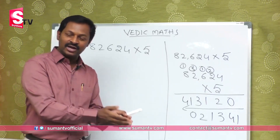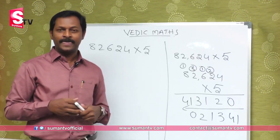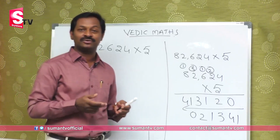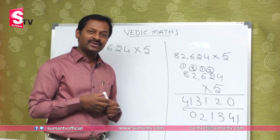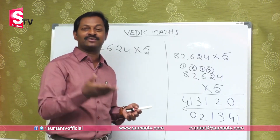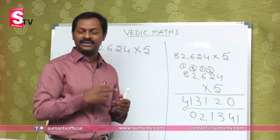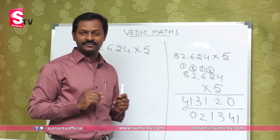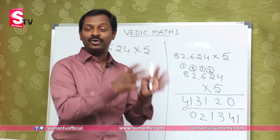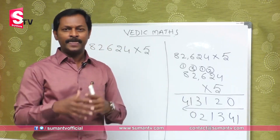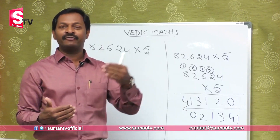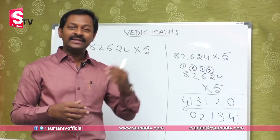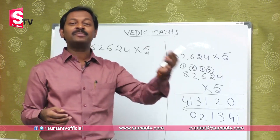It will be in addition, subtraction, multiplication, and division. In addition: 1 plus 4, 2 plus 3, 3 plus 2, or 4 plus 1 — all equal 5. In subtraction: 10 minus 5, 9 minus 4, 8 minus 3, 7 minus 2, or 6 minus 1. In multiplication: 1 into 5, or 5 into 1 — which is 5. In division: 5 by 1 equals 5, 10 by 2 equals 5, 15 by 3 equals 5, 20 by 4 equals 5.